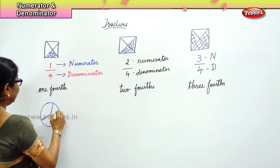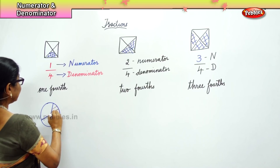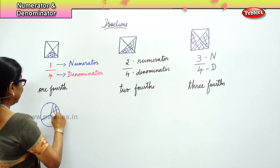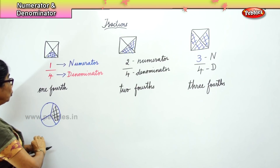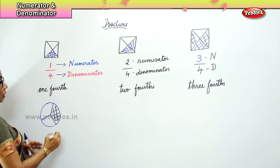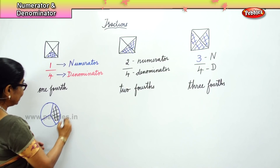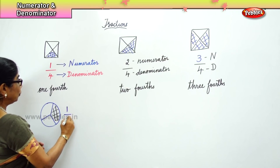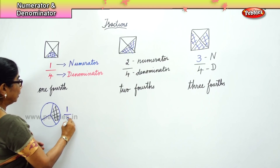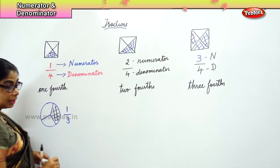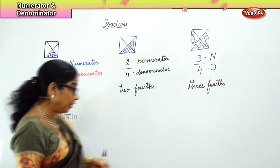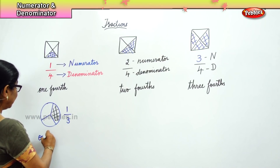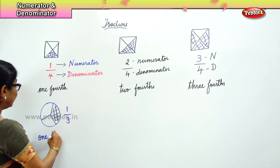Here I shade 1 portion and we have been dividing it into 3 parts. So you write it as 1 part out of 3 parts — that is, we write it as 1 third.